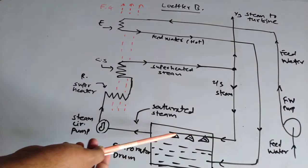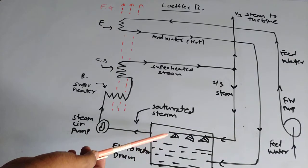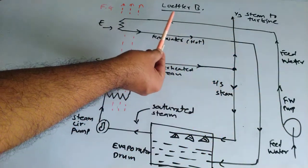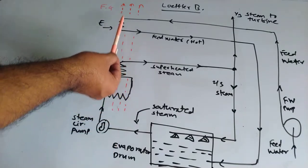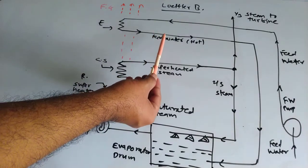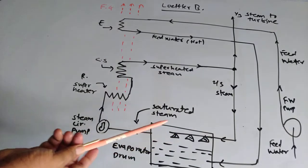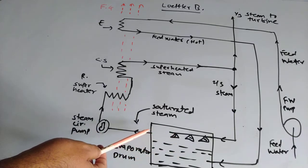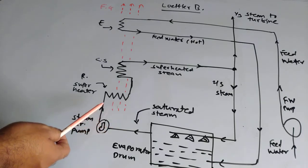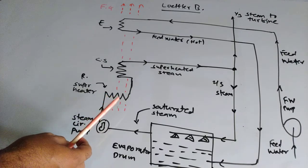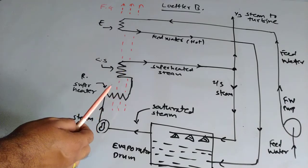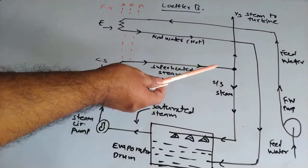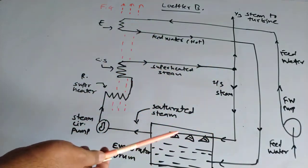Through nozzles, the steam enters the evaporating drum and the cycle is repeated. Feed water comes into the economizer via the feed pump, is preheated by flue gases, and is collected into the evaporating drum where it mixes with the steam already present. That saturated steam is circulated by the circulating pump to the radiant superheater, heated by flame radiation, then sent to the convection superheater where it becomes superheated. One third of that superheated steam proceeds to the turbine, and two thirds returns to the evaporating drum.